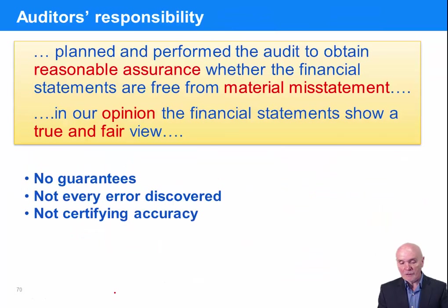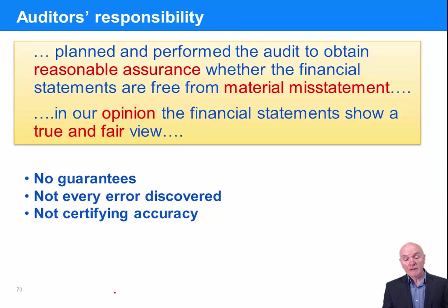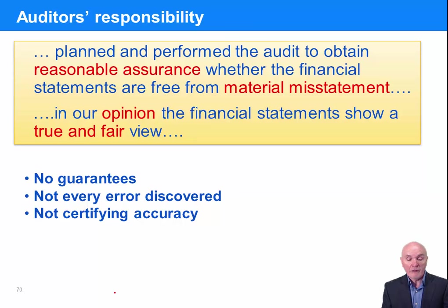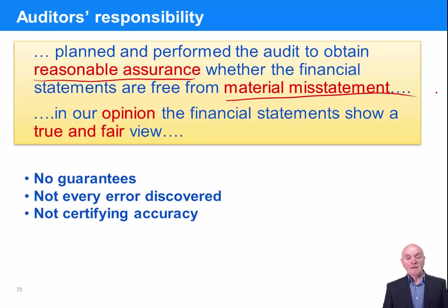Back to planning the audit. When we looked at the audit report, there was a line saying that we planned and performed the audit — so we have to do it. It is a requirement; it is an ISA — an International Standard on Auditing — that you plan the audit, because you can't do it well otherwise. What we're looking for is planning which will allow us to achieve reasonable assurance that the statements are free of material misstatement, and we can give with confidence the opinion that the financial statements are true and fair.